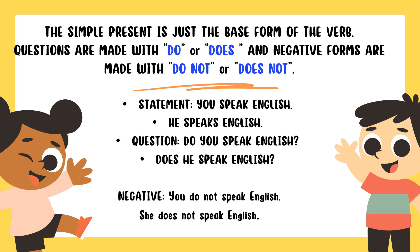The simple present is just the base form of the verb. If the verb is 'speak,' the base form is just 'speak.' Questions are made with do or does, and negative forms are made with do not or does not. When we use I, you, and plural subjects, we use 'do.' But if the subject is singular, we use 'does.'